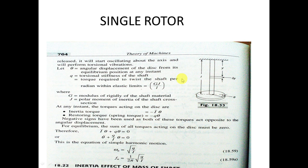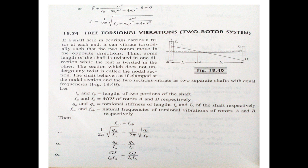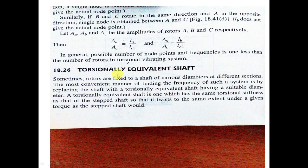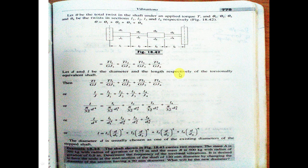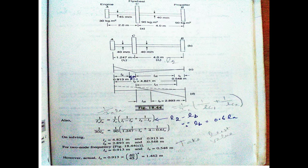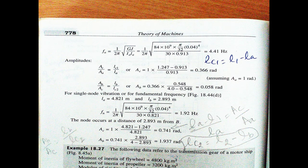In this video, we will be discussing about the single rotor system, free torsional vibrations in a two rotor system, three rotor system, and the torsional equivalent shaft. We will also see a number of solved examples explained step by step, including what is meant by a node, single node frequency, two node frequency, and so on.